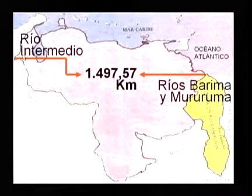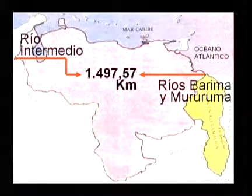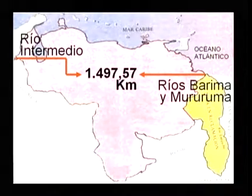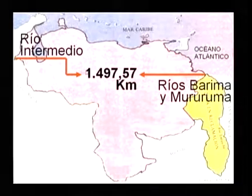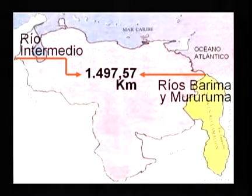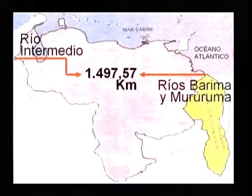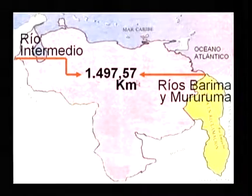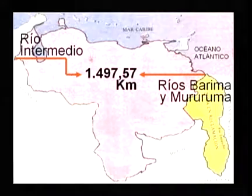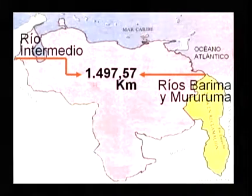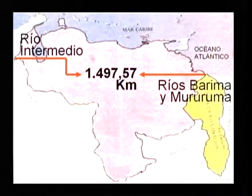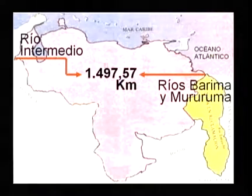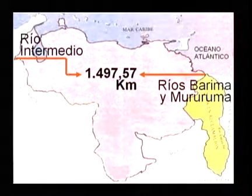A continuación, observa las distancias máximas de oeste a este. Tomamos nuestro punto más oeste, que corresponde al río Intermedio, hasta el este, que es la confluencia de los ríos Barima y Mururuma. Allí vamos a tener una distancia de 1.497,57 kilómetros. Anota los puntos correspondientes: río Intermedio, ríos Barima y Mururuma, y coloca su distancia correspondiente.